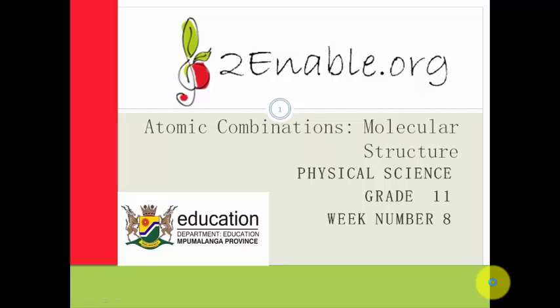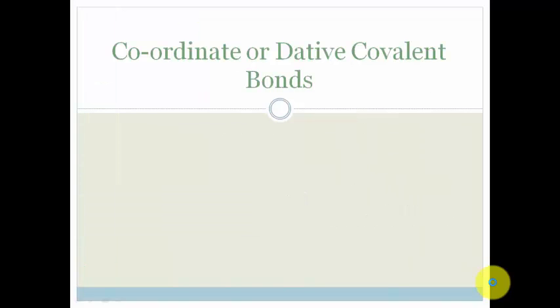In this lesson, it's a very brief lesson, and we're going to be looking at coordinate or dative covalent bonds. So these are either called coordinate covalent bonds or dative covalent bonds. Either way, it's the same thing.